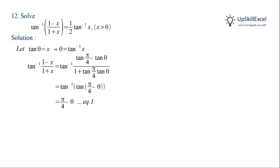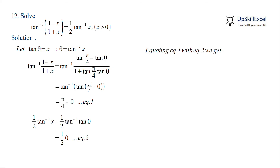Similarly, the right hand side: half tan inverse x is equal to half of theta. Equating both equations, we get pi by 4 minus theta is equal to half theta. Simplifying this, we get theta is equal to pi by 6.